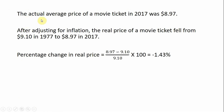The real, or inflation-adjusted, price of a movie ticket in 1977 is $9.10. However, if we were to look up the actual average price of a movie ticket in 2017, one source I found listed it at $8.97. So after adjusting for inflation, the real price of a movie ticket actually fell from $9.10 in 1977 to $8.97 in 2017. Using our percentage change formula, the real inflation-adjusted price of movie tickets fell over this time period by 1.4%, a little under 1.5%.